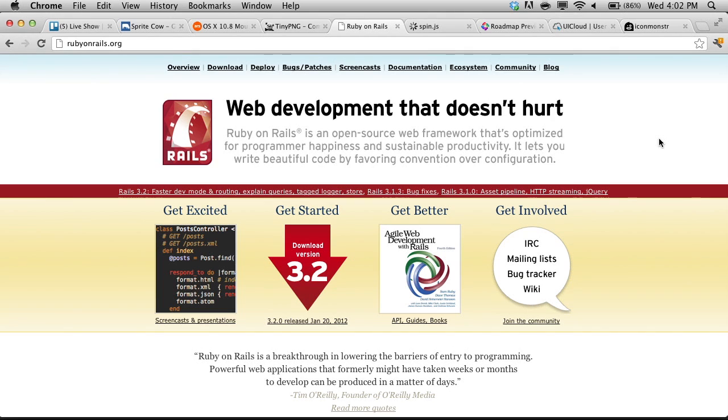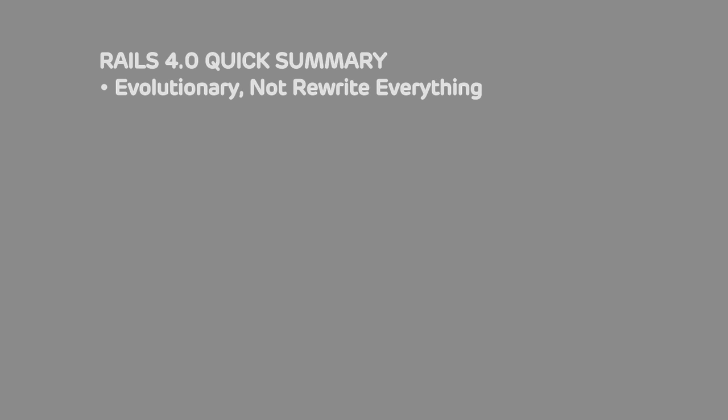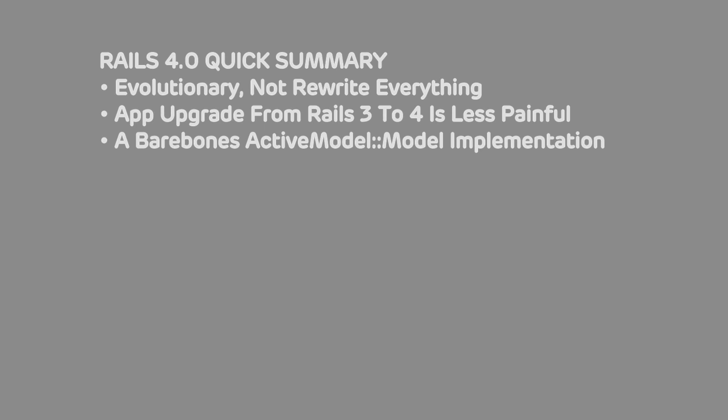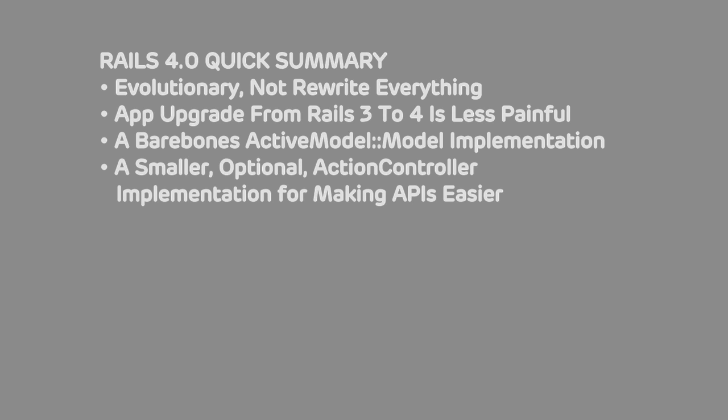Next up, Ruby on Rails 4.0 is going to be coming out at some point in the future. The overarching idea of Rails 4.0 is that it's going to be more of an evolutionary than revolutionary release — it's not going to be something where they intend to rewrite everything. If you've upgraded apps from Rails 2 to Rails 3, going from Rails 3 to Rails 4 is going to be a much less painful experience. There is a bare bones active model implementation, so if you want a model that's not backed by the database, it'll be much quicker and simpler. There's also a smaller and optional action controller implementation for creating things like APIs.